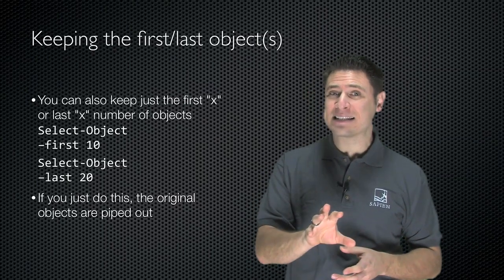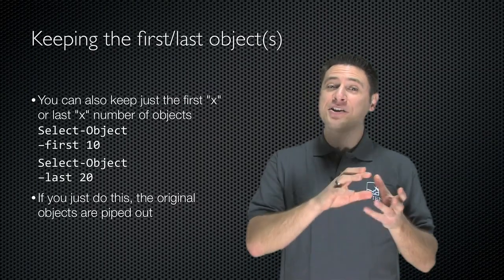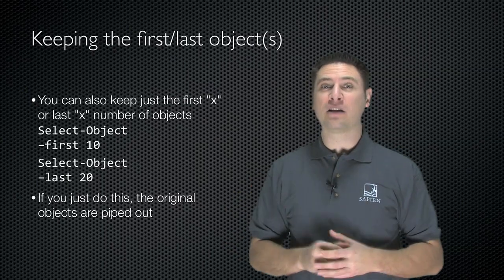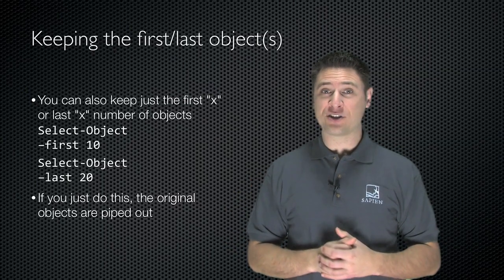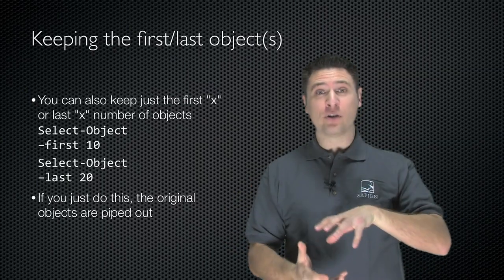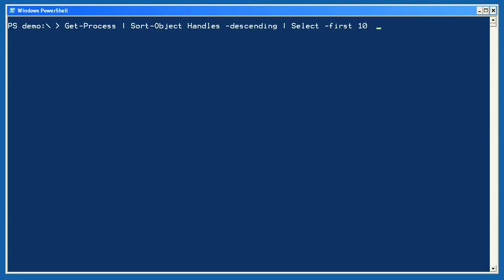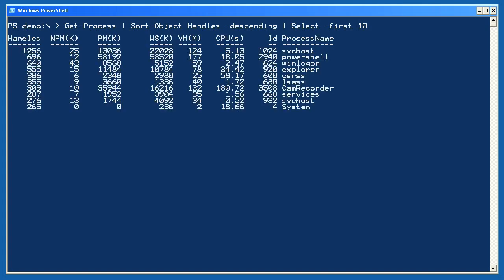Select-Object -First 10 or Select-Object -Last 20, for example, will keep the first or last 20 objects. When you do this, Select-Object will actually pipe out the original objects without modifying them — it's just going to keep whatever number you specified. I'm going to start by getting a bunch of process objects, sorting them on their handles property, and then selecting the first 10. The result is a convenient list of the top handle-using processes on my system.